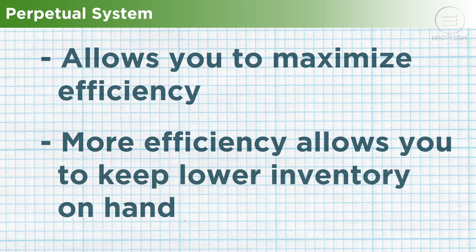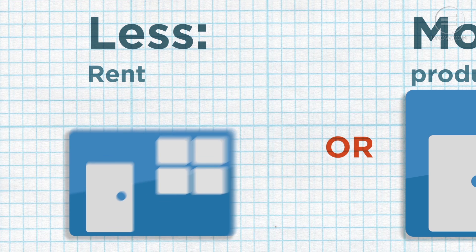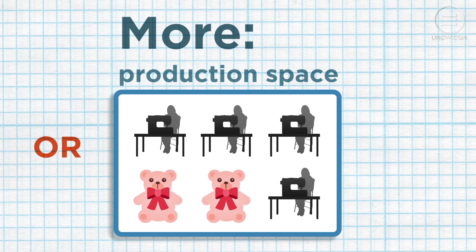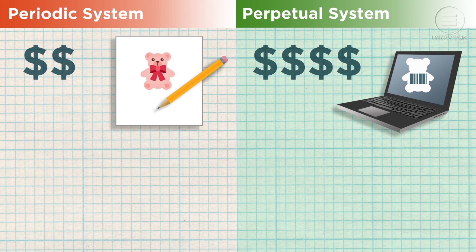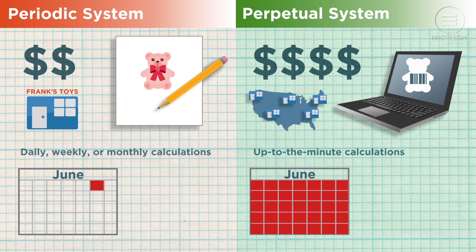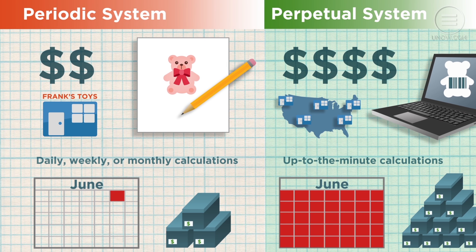This is a powerful tool because it allows you to maximize the efficiency with which you organize inventory purchases, and it ultimately allows you to keep lower physical inventory on hand. When you devote less space to inventory, you can spend less on rent or devote more space to something more useful — a huge advantage for some businesses. However, the cost of the system can be very high, and many small businesses don't need up-to-the-minute calculations. Small businesses typically have low inventory, so the periodic system can be extremely cost effective because it doesn't require bar scanners, electronic codes, or technological management.